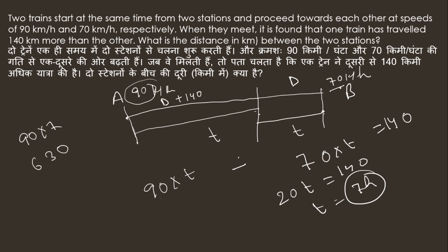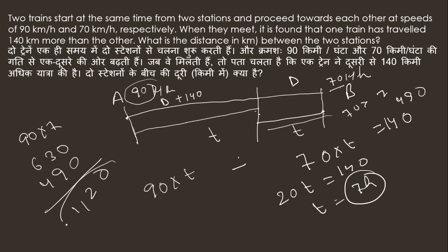The second train travelled 70 into 7, which is 490 km. If we add these, the total distance between the two stations is 630 plus 490 equals 1120 km. Please like, comment, share, and subscribe. Thank you.